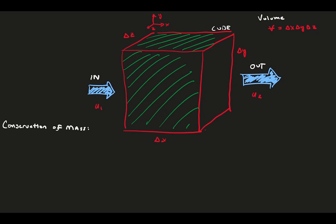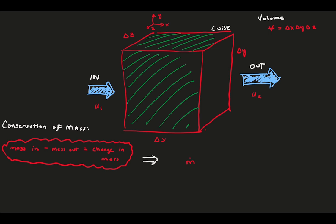Conservation of mass states that if the mass going into the cube and out leaving the cube are different, then the cube must be changing mass itself. In other words, if we put more stuff into a box than we take out, our box gains stuff and gets heavier.